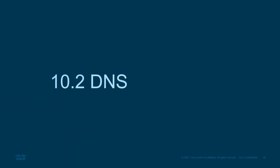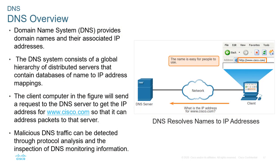The next main service is DNS — Domain Name Systems. It provides domain names and their associated IP addresses. For example, when you go to Google.com, people know the name, but systems know the IP address. DNS translates the domain name to an IP address so the device knows where to send the message.